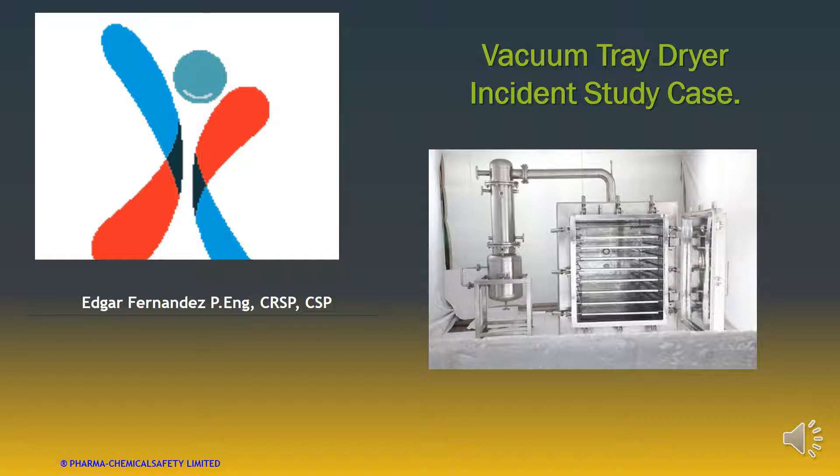Engineering reviewed the thickness of the dryer wall to verify the necessity of explosion proof panel or venting. And in this case, the dryer was compliant, and if not, you need to go to NFPA 68. And NFPA 86 says that thickness of less than three inches, you need to install explosion proof or venting or relief system.